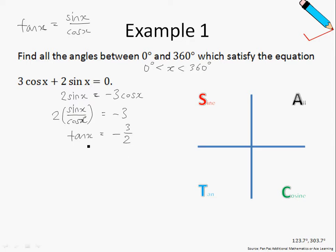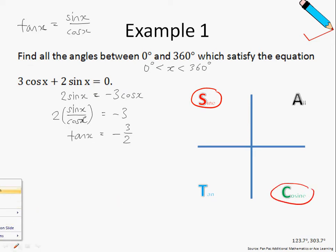Since tan x is a negative value, using our ASTC diagram, we can conclude that we are in the sine quadrant or the cosine quadrant, because only in these two quadrants will you get a negative value for tan x.